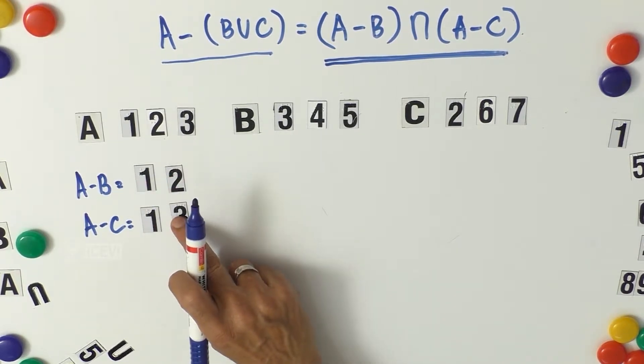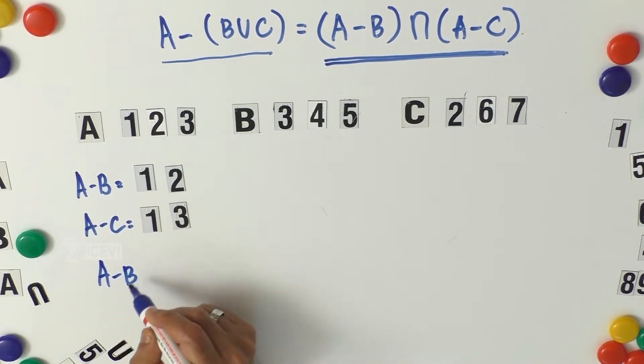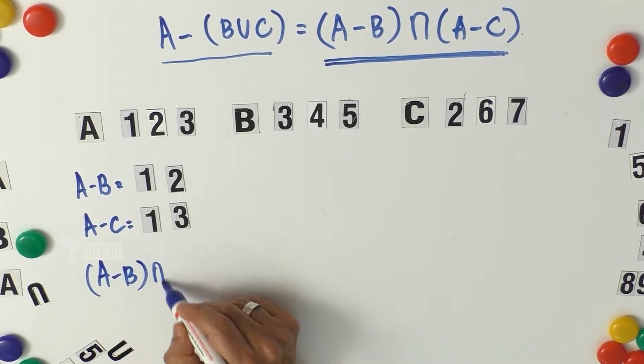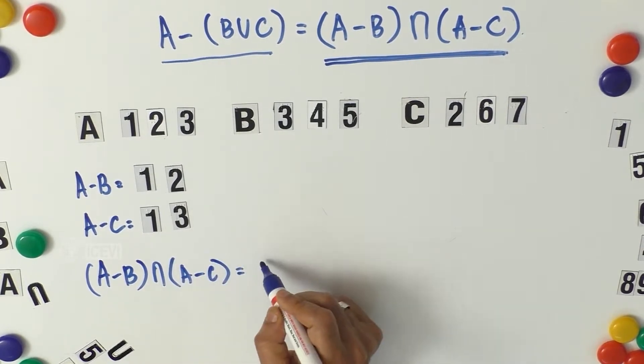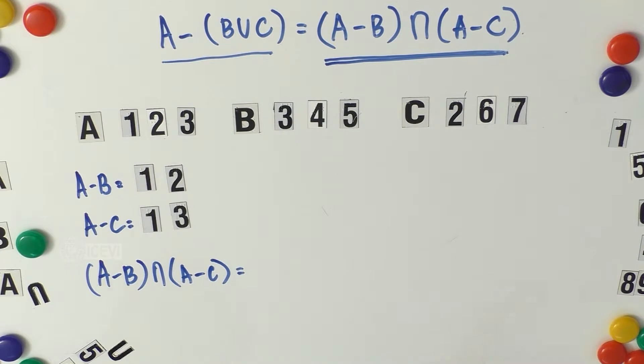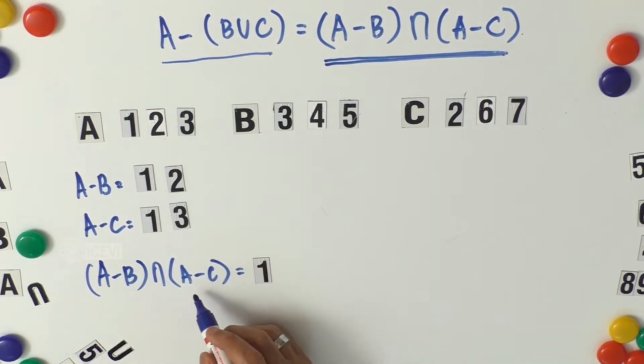It is only one element. So 1 and 2 in A minus B, 1 and 3 in A minus C. So A minus B intersection A minus C equals 1.